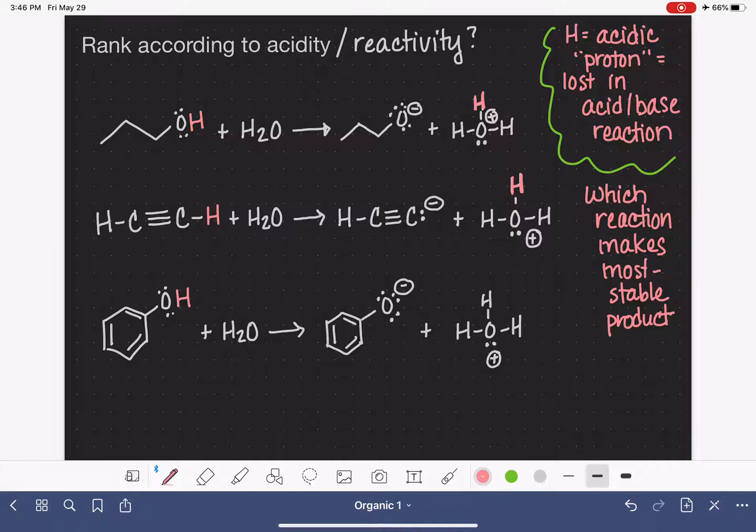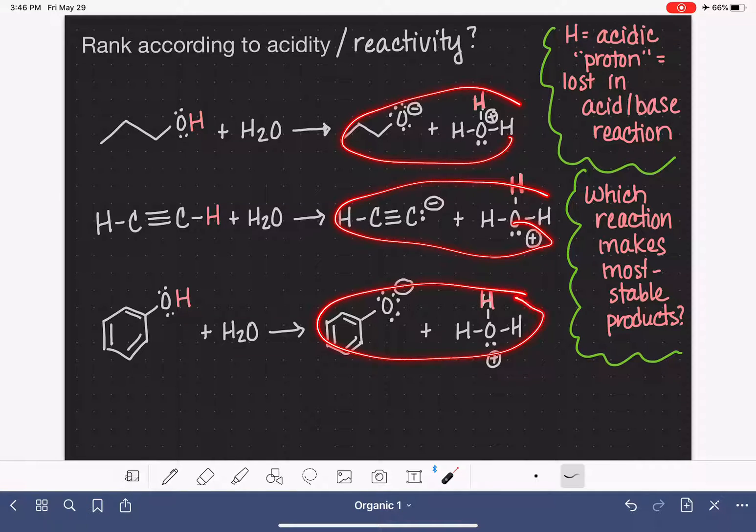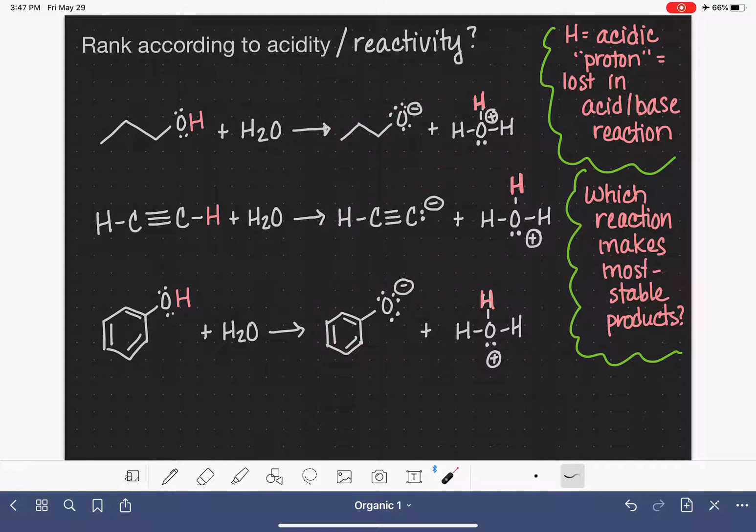What we know about chemistry is that reactions are very favorable, meaning that they're very likely to proceed if they produce stable products. So we want to focus our attention on the products of each of these reactions. We want to compare the stability of the products. When we find which reaction produces the most stable products, that will give us information about which of these reactions is most favorable or most likely to proceed.